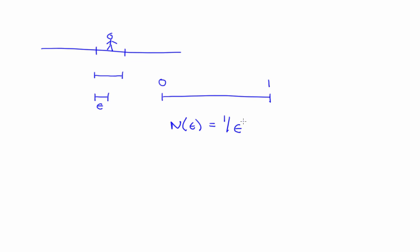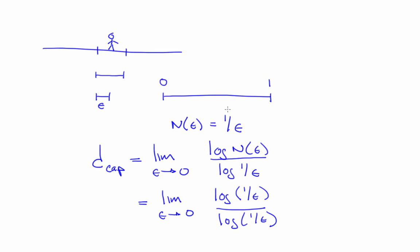How to think about that? If epsilon is half of a unit long, it would take 2 of them. If epsilon is 1 fifth of a unit long, it would take 5 of them, and so on. Let's plug that back into the capacity dimension definition. Here's what you get. And that's pretty easy to evaluate. You don't even need to take the limit. It's 1. And that's good. We want the fractal dimension to collapse down to be the same as the topological dimension if the object really is 1D.